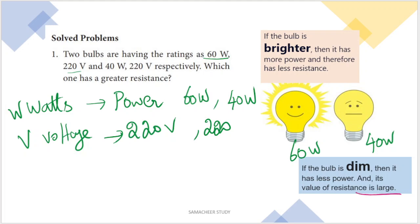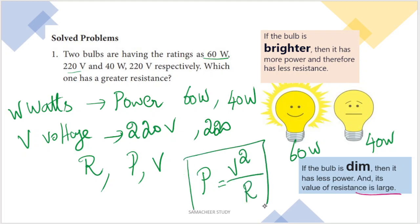Now we have to find which one has greater resistance. R represents resistance. The formula connecting resistance, power, and voltage is: P equals V squared divided by R. So if we look at the relationship between P and R, P is inversely proportional to R.